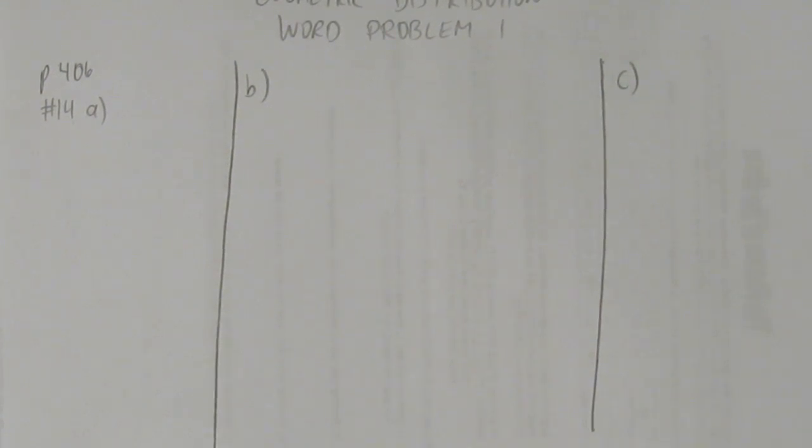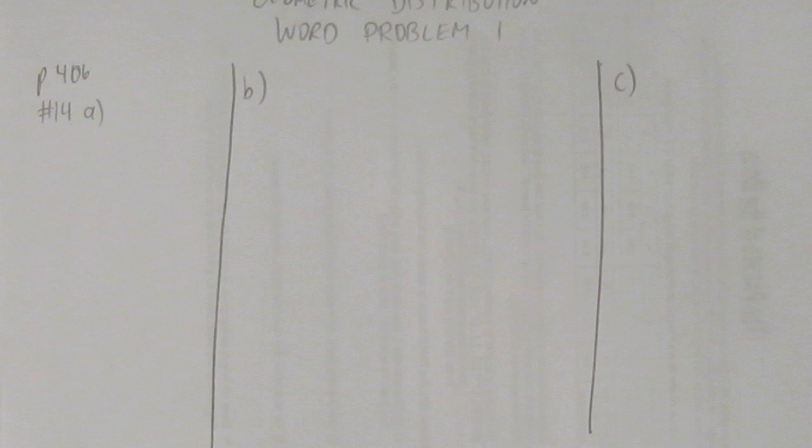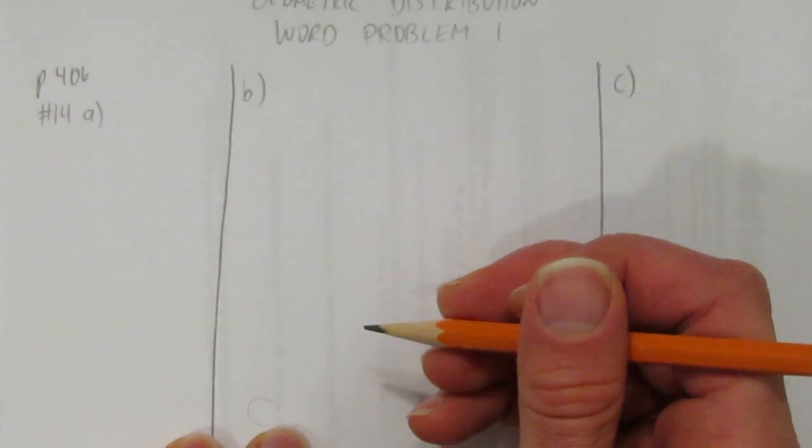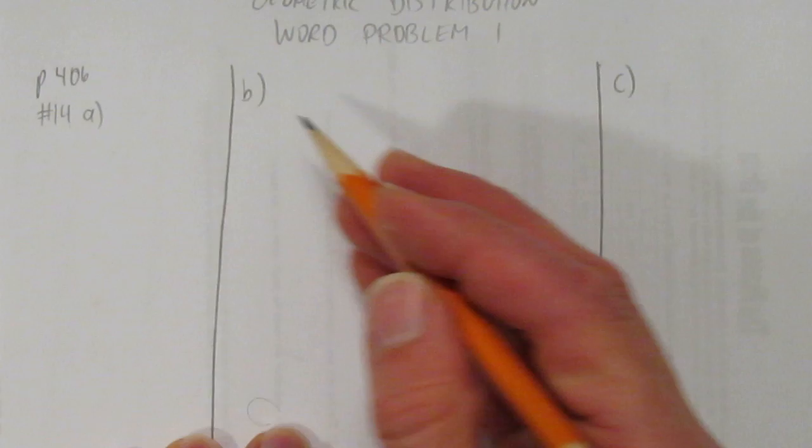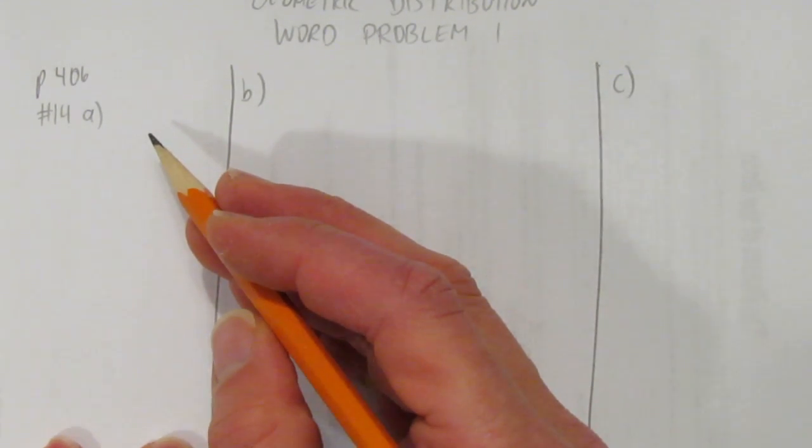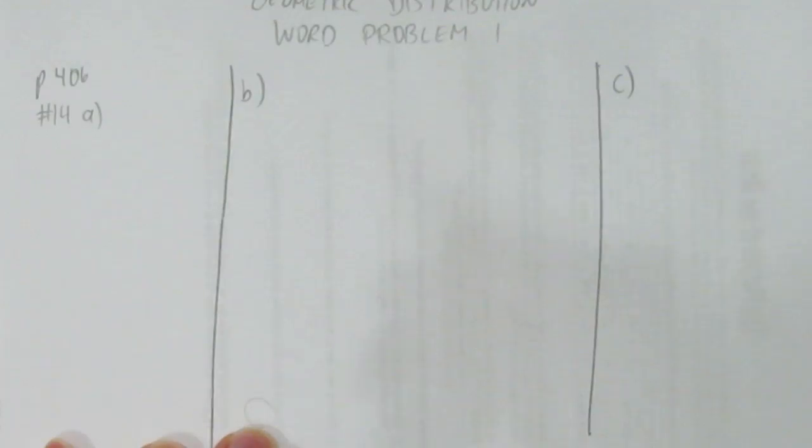In this video, we'll look at a geometric distribution word problem. A factory making printed circuit boards has a defect rate of 2.4% on one of its production lines. An inspector tests randomly selected circuit boards from this production line. What is the probability that the first defective circuit board will be the sixth one tested?